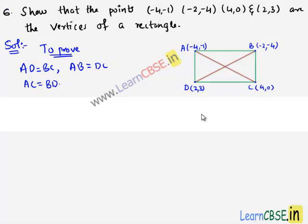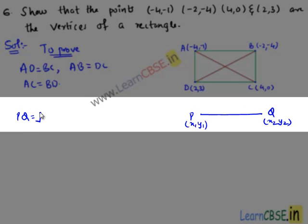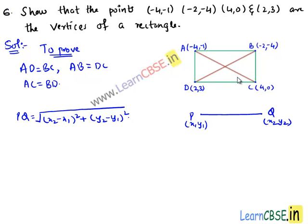We know that the distance between two points P and Q is given by PQ equals the square root of (x₂ - x₁)² + (y₂ - y₁)². Now let us find the lengths of the sides and the lengths of the diagonals.